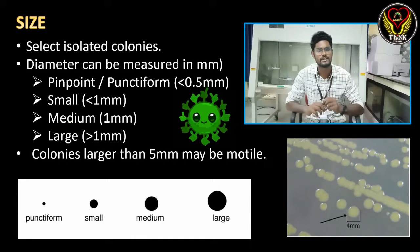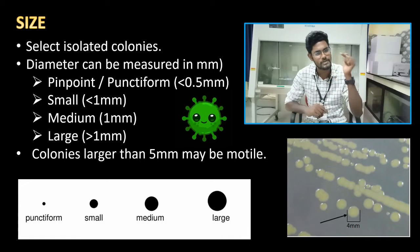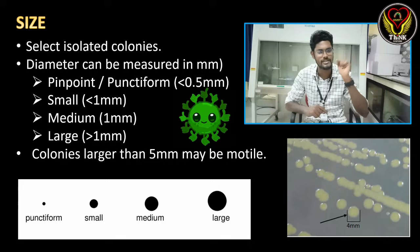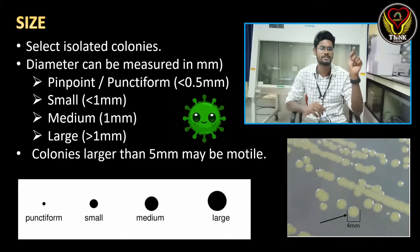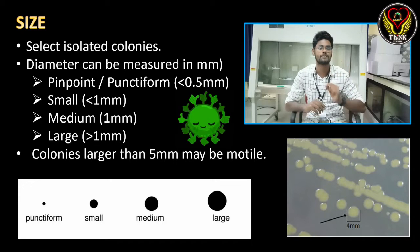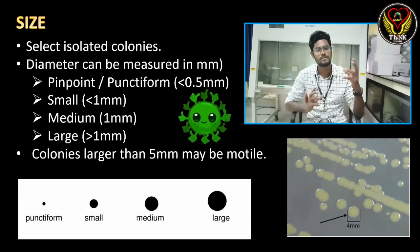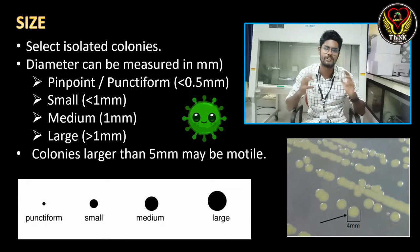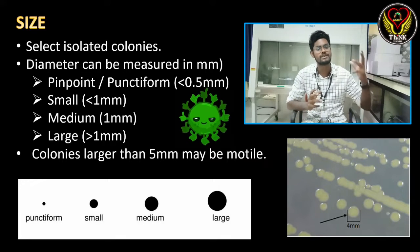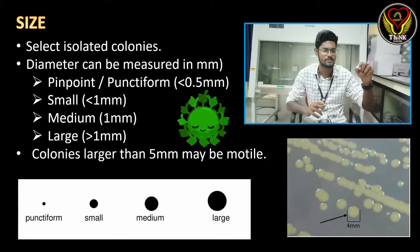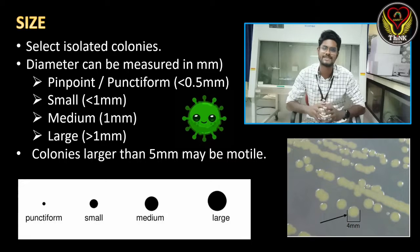We measure colony size in millimetres. It is less than 0.5 mm in diameter — that is a very small pinpoint colony. In 0.5 mm to 1 mm, it is a small colony. If 1 mm to 5 mm, it is a medium colony. If larger than 5 mm, it is a large colony. If equal to or greater than 5 mm, it is very large.